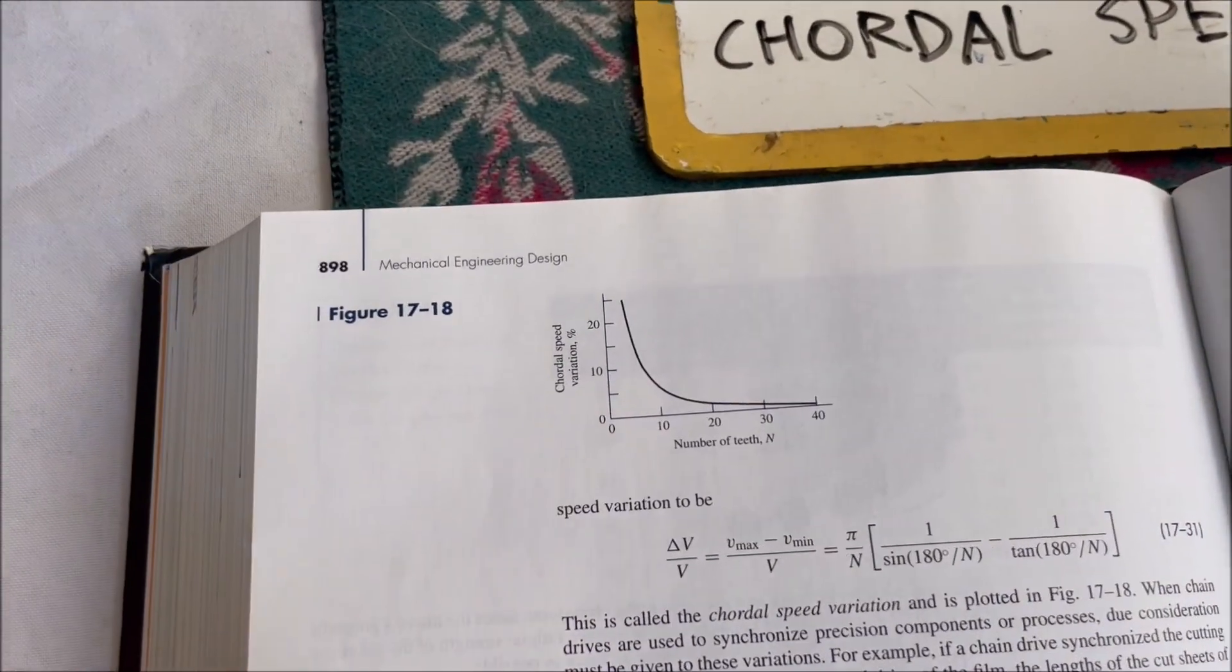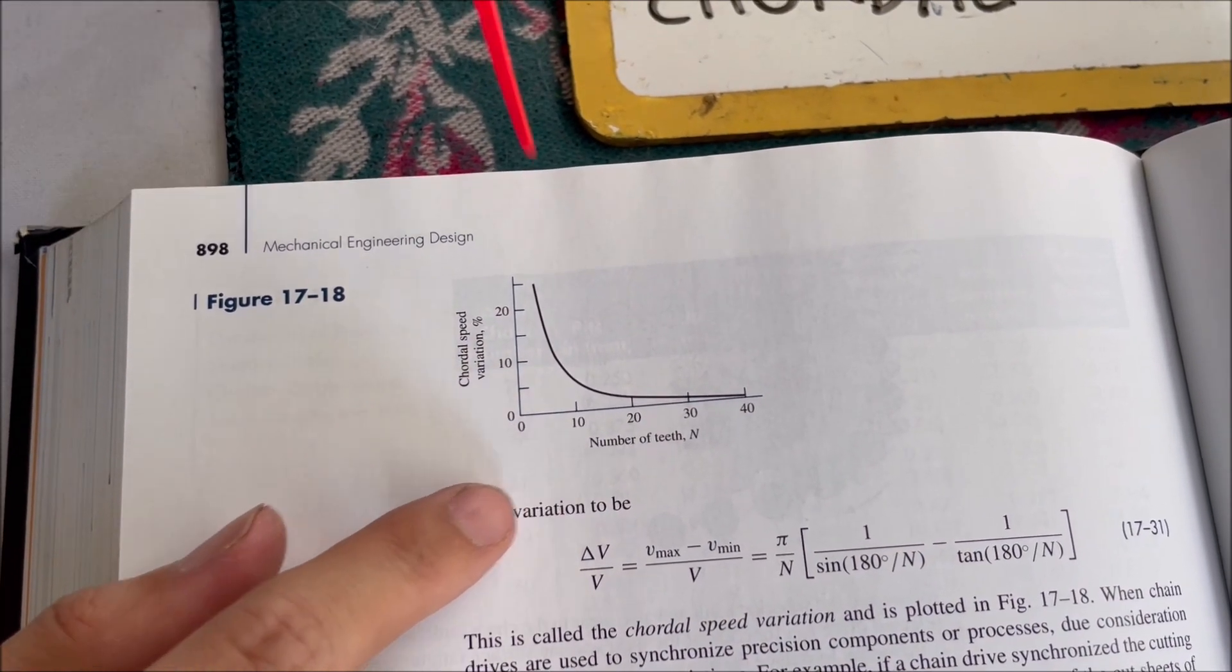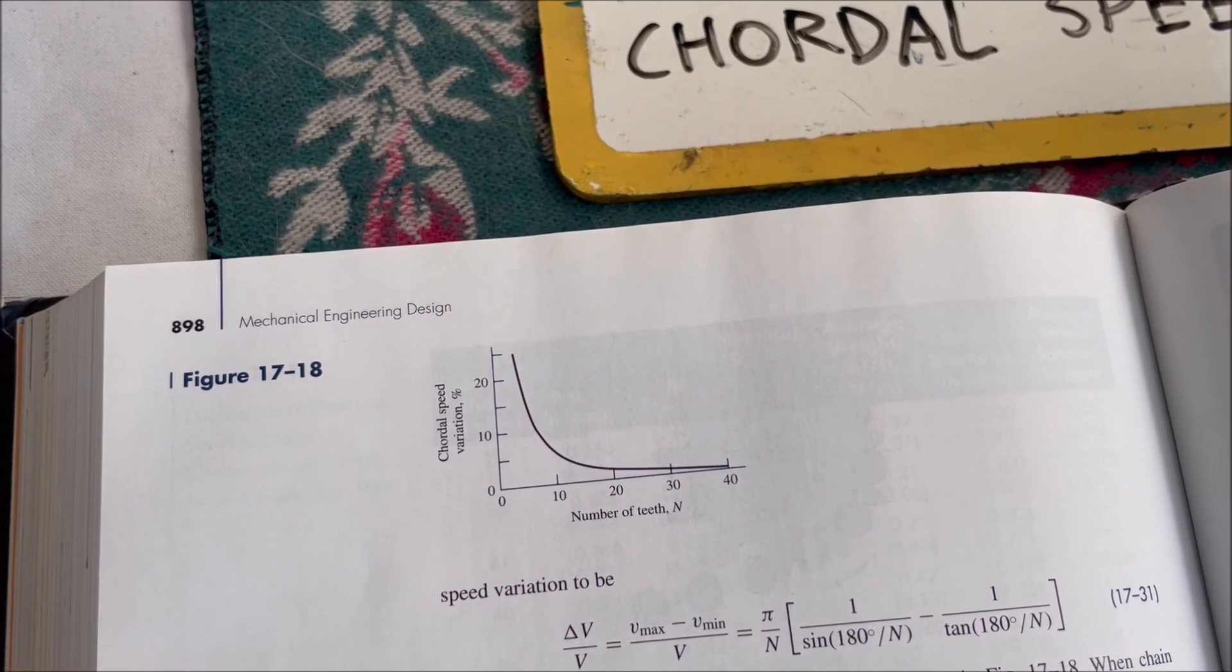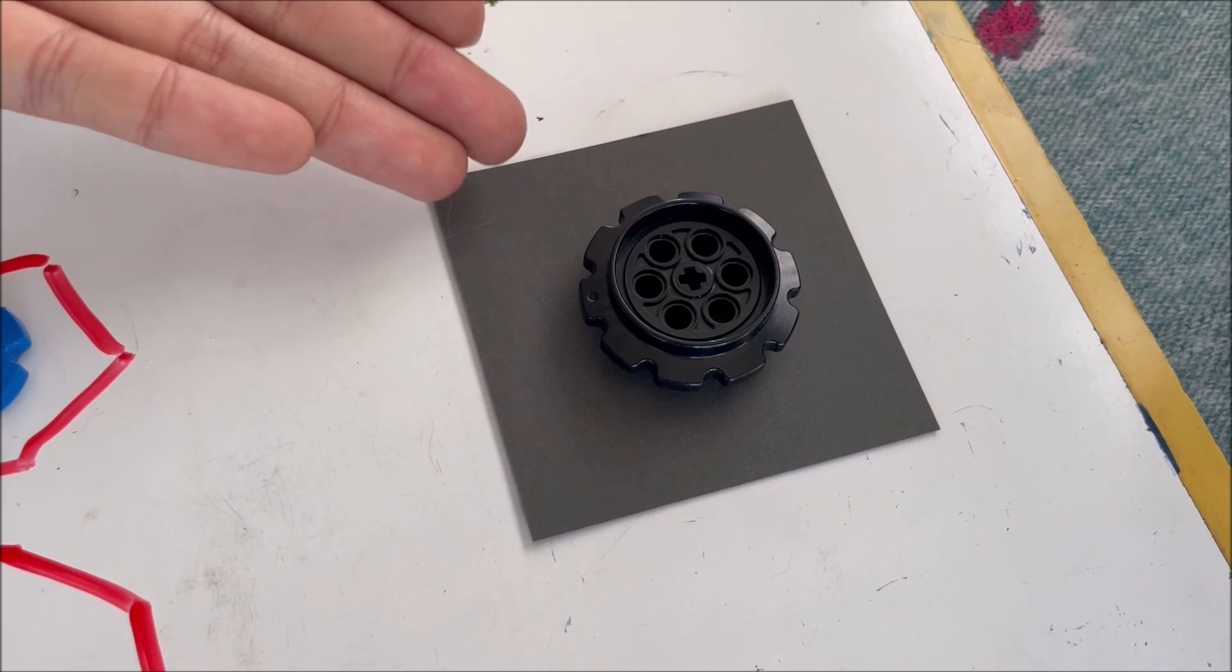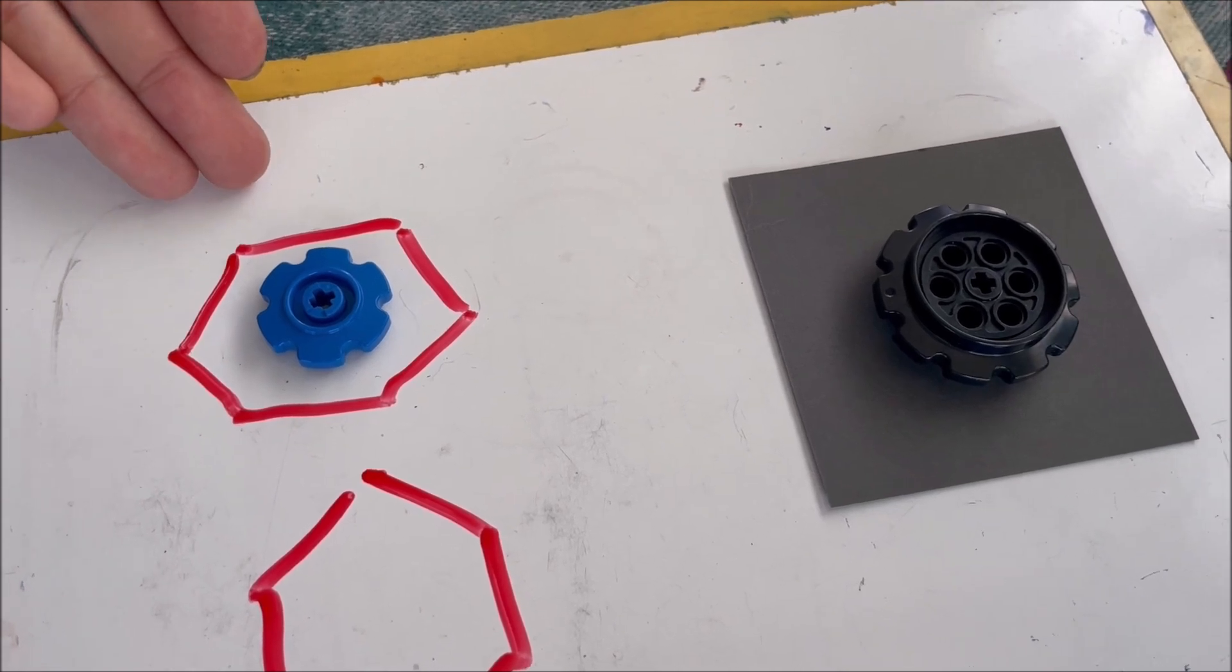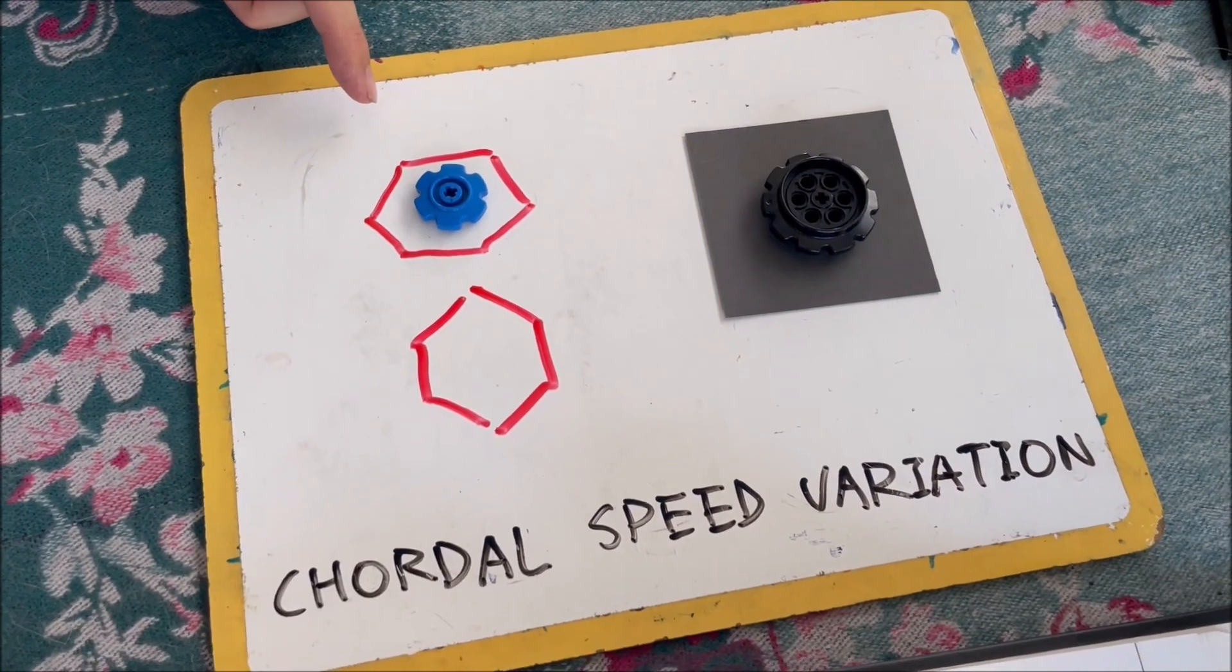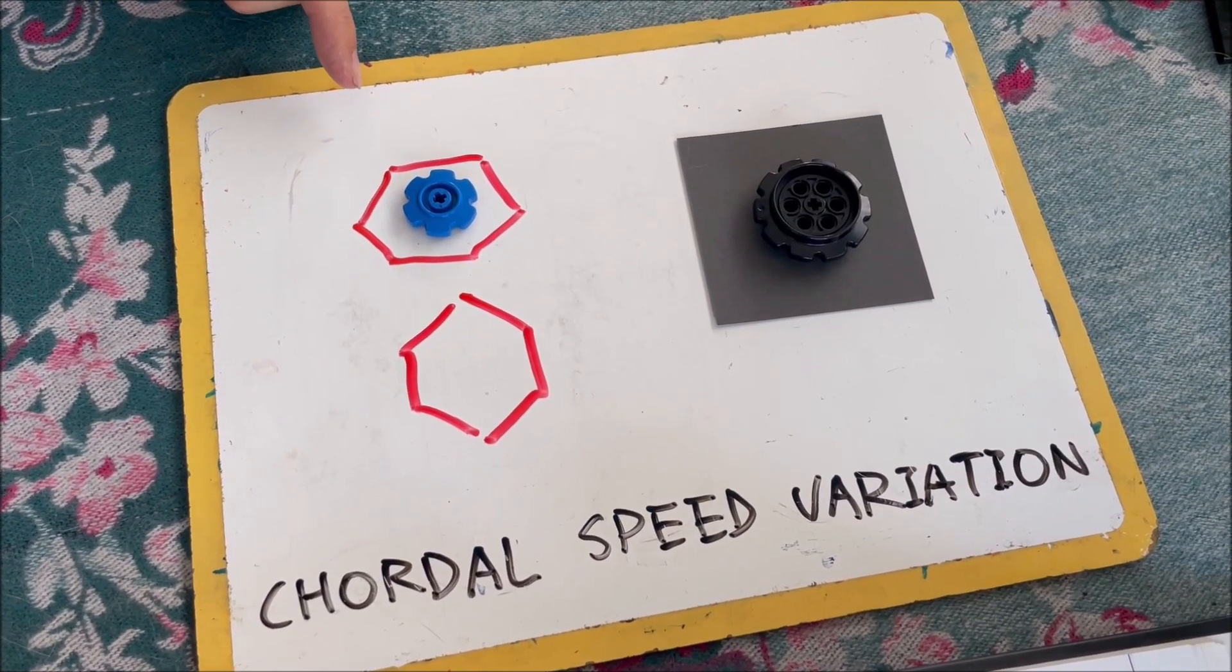They also have a chart here which shows you how much speed variation you get based on the number of teeth of your sprocket. The LEGO sprockets over here somewhere, so that means we're getting something like 15% speed variation. So what can you do about this? Well, one choice from the chart is to use a bigger sprocket. This is the next size up. It's 10 teeth, and as you can see, it's a lot closer to round than the six tooth sprocket. Your other choice is to take your sprocket and run it slower, because the chordal speed variation is a percentage of your speed. The slower you run the sprocket, the less total variation in speed you'll get, and maybe it'll be less likely to shake the balls off your chainlift.